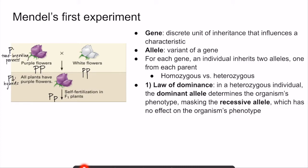Mendel came up with his first law, known as the law of dominance. The law of dominance states that in a heterozygous individual — one who has two different alleles for a particular characteristic — the dominant allele determines the organism's phenotype, while the recessive allele is masked by the dominant allele and has no visible effect on the organism's phenotype. By convention, the dominant allele is represented by a capital letter while the recessive allele is represented by a lowercase letter. In the F1 generation, all plants had purple flowers because they inherited a purple allele and a white allele from their parents. The allele for purple flowers is dominant and the allele for white flowers is recessive, which is why only the purple flower trait is expressed. The capital P represents the purple allele and the lowercase p represents the white allele.